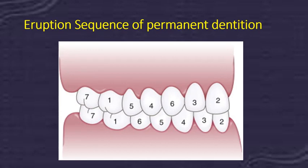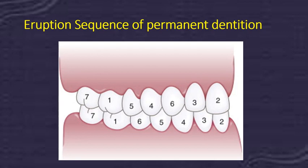There is a specific sequence for the eruption of permanent dentition in the maxillary and mandibular arch. In the maxillary arch, the first permanent tooth to erupt is the maxillary first permanent molar, followed by the central incisor, lateral incisor, first premolar, second premolar, and then the canine.